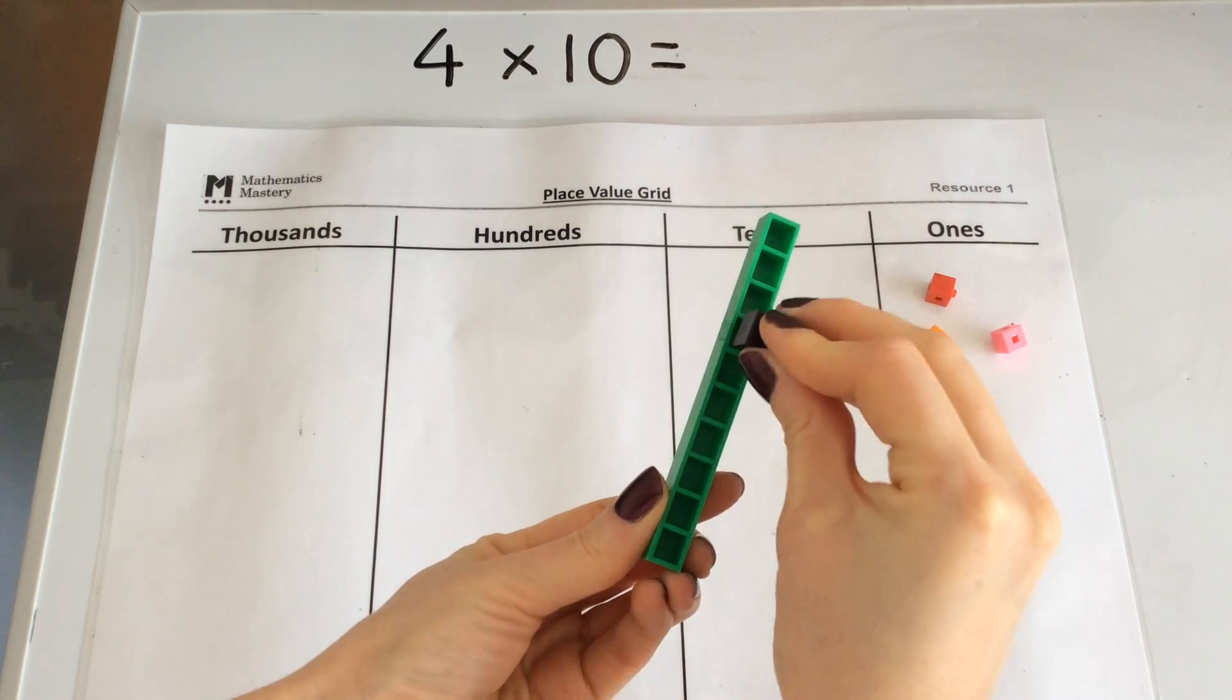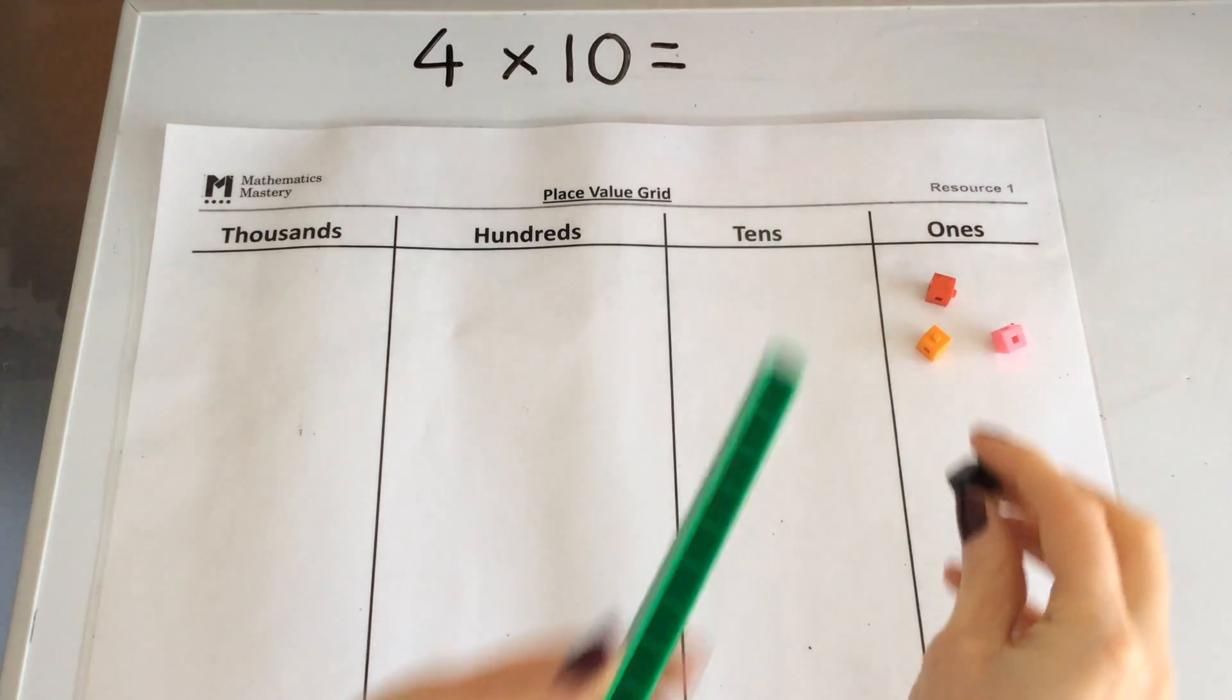1, 2, 3, 4, 5, 6, 7, 8, 9, 10. It is the same as a row of 10 ones.